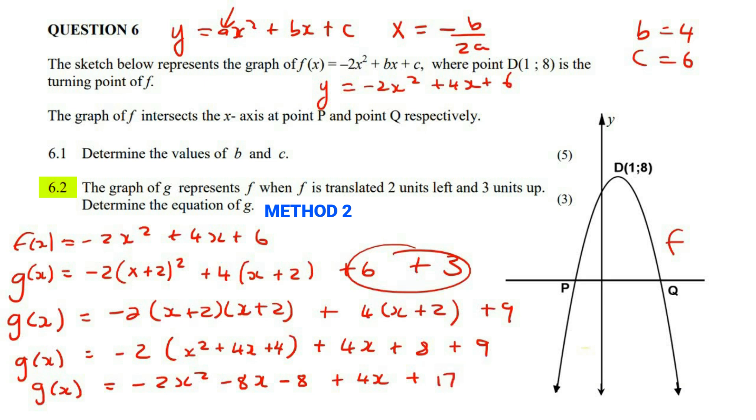And now we're just going to neaten up a little bit more. So it's going to be minus two x squared, minus eight plus four is minus four, and then minus eight plus 17 is plus nine. And that is also a valid answer.